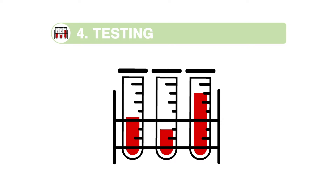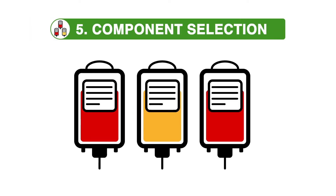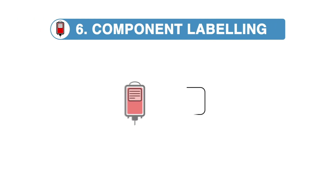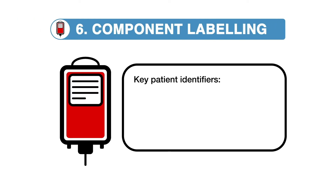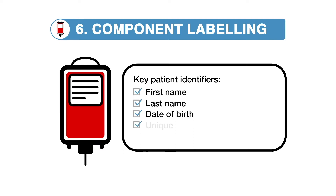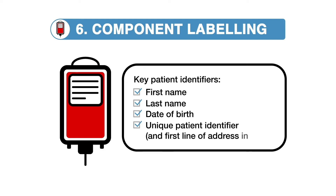Component selection: the correct components are selected to comply with the patient's requirements and the clinical request. Component labeling, availability, handling and storage: the right component needs to be labeled with the correct four or five key patient identifiers — first name, last name, date of birth, unique patient identifier, and first line of address in Wales — of the intended recipient. Components need to be accessible and available for the time required; if not, the clinical area must be informed, and components must be handled and stored correctly as defined in guidelines.